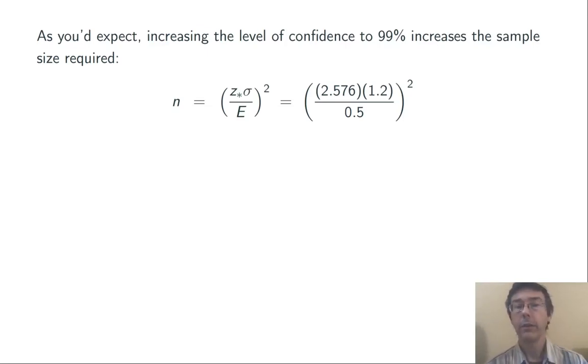Now, as you'd expect, if we increase the confidence level, we're going to also have to increase the sample size. So, for example, if we want a 99% confidence interval here, we get a larger sample size required, in this case 38.2, which rounds up to 39 weighings.